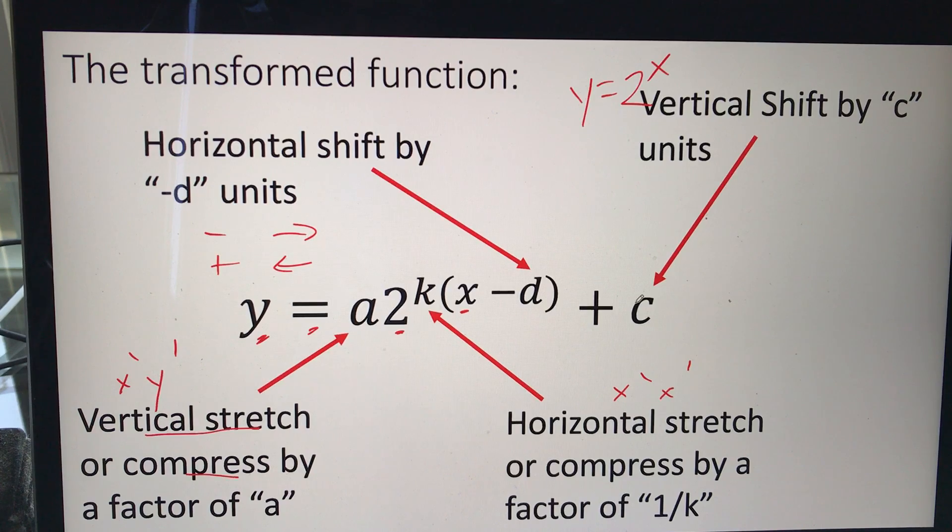And the last one, c, our vertical shift. This one makes a little more sense for us. If it's positive, it goes up. And if it's negative, it goes down.